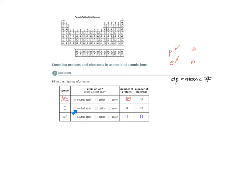For this problem, I don't have the element symbol and I'm not told whether it's an atom or an ion. But I am given the number of protons and the number of electrons. The number of protons is 41, and since the number of protons equals the atomic number, if I go to atomic number 41, I find the element symbol Nb. I can also see that the number of protons is not equal to the number of electrons — I have 41 protons and 39 electrons.